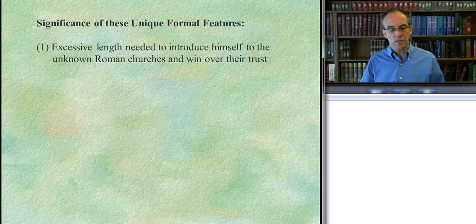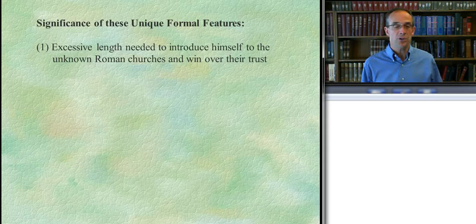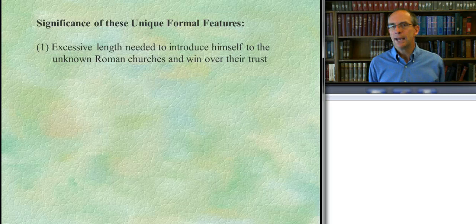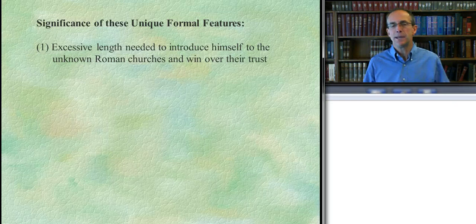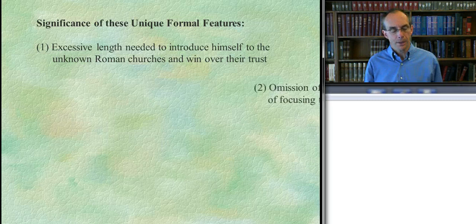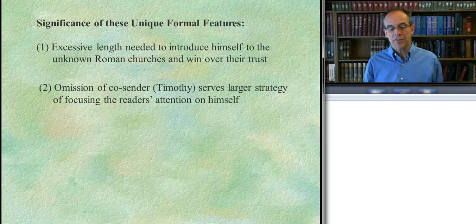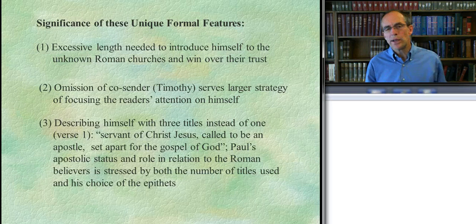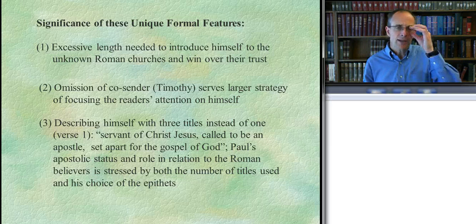Let's look at them more closely. For instance, the length — Paul needs more time at the very beginning of the letter to introduce himself. Somebody's talking to them whom they don't know and are suspicious about. Paul isn't confident they're going to actually hear or heed him in the rest of the letter, so he needs extra time at the beginning. This would also explain why he omits the name of Timothy — he wants the reader's attention focused on him and his unique relationship to them.